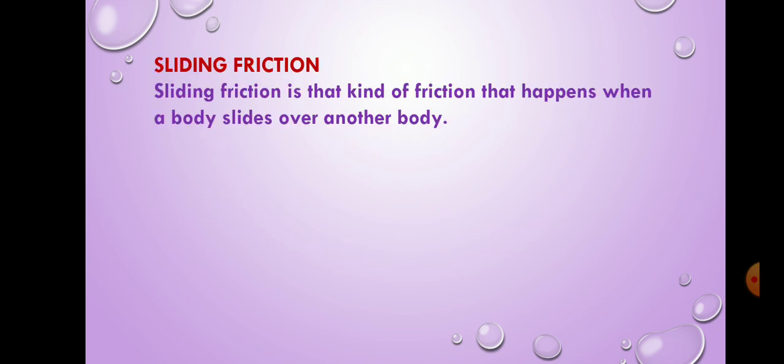Now move on to subcategories of dynamic friction. The first one is sliding friction. Here we have an inclined plane, on which a box is placed. What happens to that box? It moves down with sliding. Such friction is sliding friction.